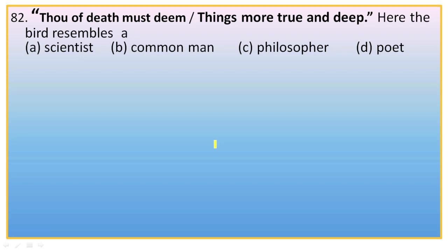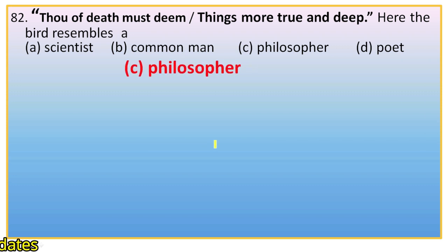Question 82: 'Thou of death must deem things more true and deep.' Here the bird resembles — Shelley compares the bird to a philosopher. Like a philosopher, the bird possesses a deeper and truer knowledge about death. So the right option is C, philosopher.